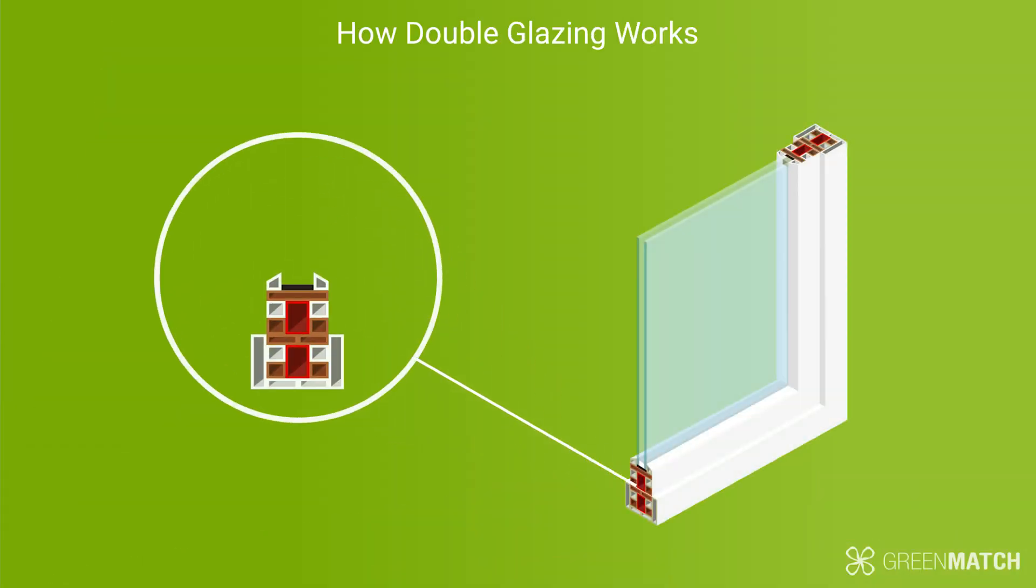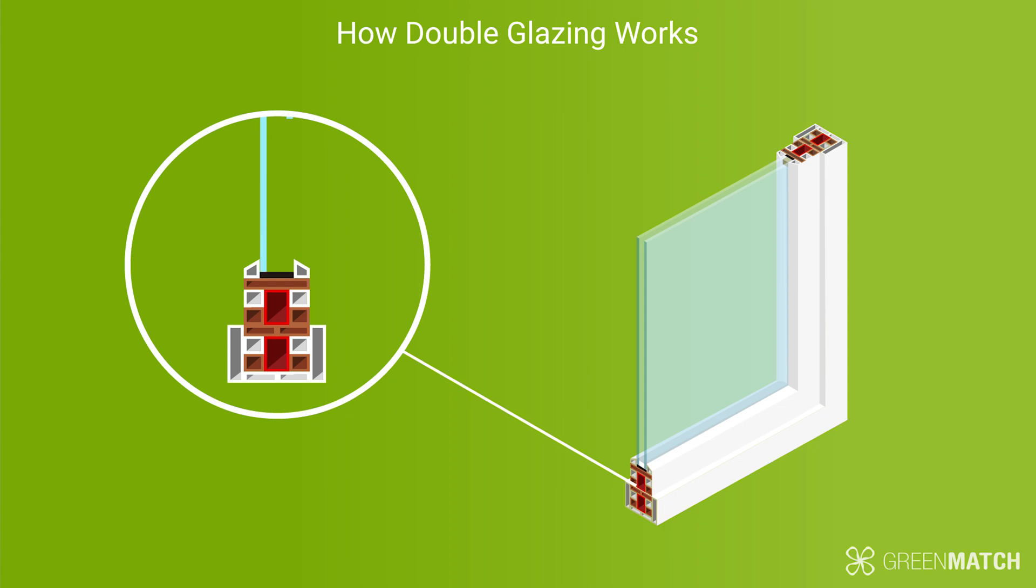The process of double glazing involves fitting two sheets of glass with a small gap in between them, separated by a spacer bar. The gap is usually 12 to 16 millimeters wide and can either be a vacuum or filled with argon gas.